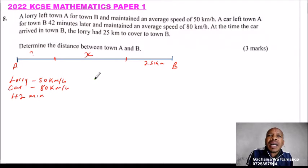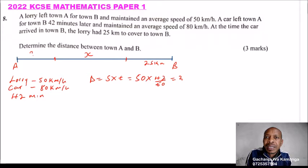So we say distance equals speed multiplied by time. The speed here is 50, you multiply by time, that is 42 minutes. You divide by 60 so that you convert to hours. And when you work out that, you'll be able to get 35 km. So by the time Arodi started the journey, Arodi had covered 35 km.